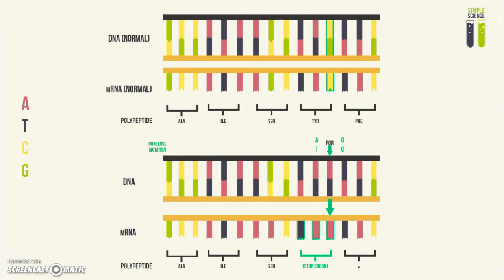The next type is a nonsense mutation. In the normal DNA molecule in the sense strand, we have a base C. However, in the mutated DNA molecule in the sense strand, we have the base A instead of the base C. In the mRNA molecule that has been transcribed from the mutated DNA, we get this codon instead of this codon, and this codon is a stop codon instead of the amino acid tyrosine.